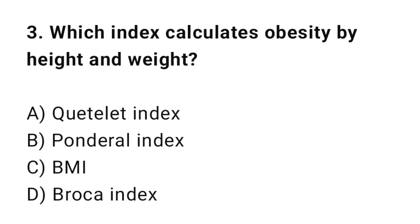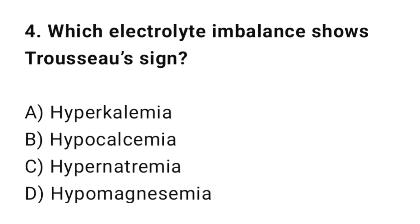Question 3: Which index calculates obesity by height and weight? The correct option is C: BMI. Question 4: Which electrolyte imbalance shows Trousseau's sign? The correct option is B: Hypocalcemia.